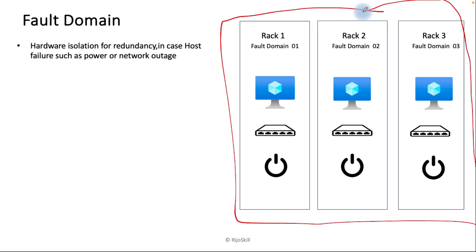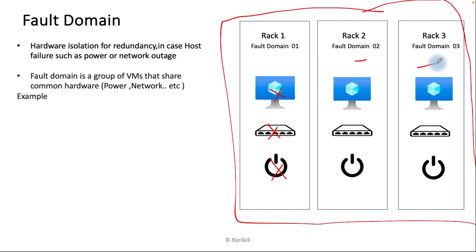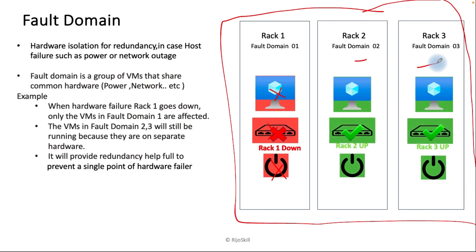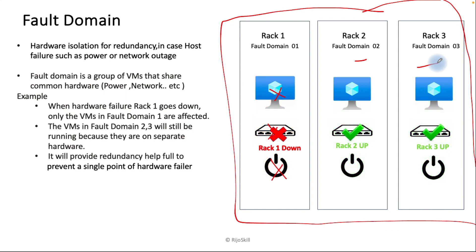A fault domain provides hardware isolation for failure events. In case of any failure such as power or network issues, the fault domain provides hardware failure protection. If any failure happens to your power, network, or actual machine, you won't face a single point of failure because fault domain two and fault domain three will still be available. When rack one goes down, only the VMs in fault domain one are affected; VMs in fault domain two and three are still running because they use separate hardware.